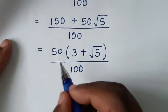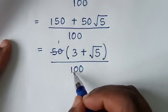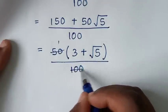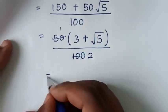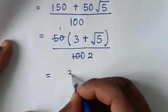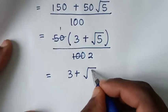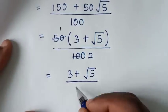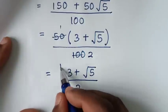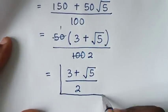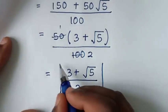We simplify: 50 divided by 100 is one half, giving a final simplified form of (3 + √5) over 2. This matches the answer from Method 1.